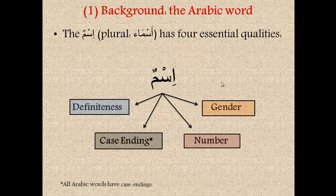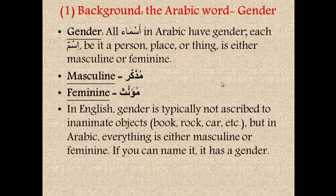Let's talk about gender. All asma' in Arabic have gender. Each ism, whether it's a person, place, or thing, is considered masculine or feminine. The Arabic word for masculine is mudhakar, and the word for feminine is mu'annath. Now in English, gender is typically not ascribed to things that are dead and inanimate. So we don't call things like books, rocks, and cars male or female.